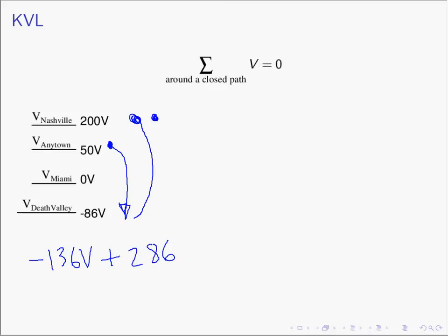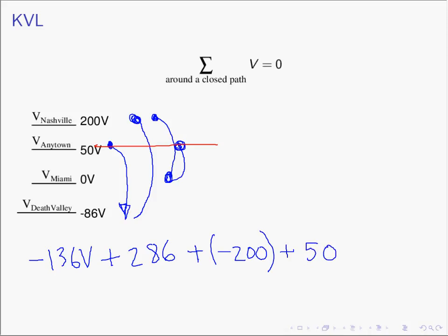And then the charged particle will have energy taken away from it and it's taken to the level of Miami, which means we added negative 200 volts of energy. And then the charged particle is brought back to the energy level at Anytown. To get to that point we have to add back from Miami up to Anytown 50 volts. Since our particle is now located at the same energy level it started from, the net change in energy has got to be zero. If you are at the same energy level you started from, the net change in energy must be zero.